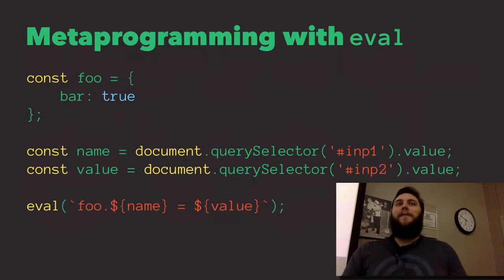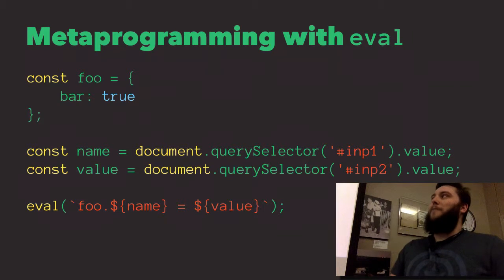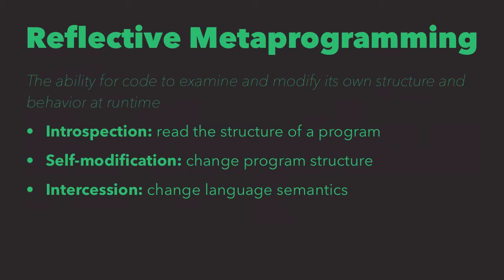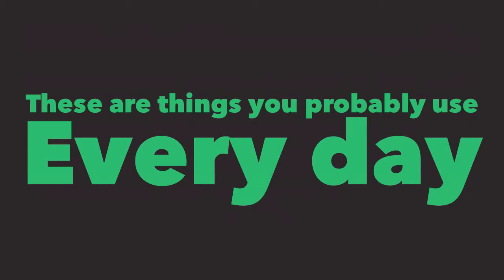Instead, I'm going to talk about a facet of metaprogramming called reflection, or reflective metaprogramming. This is really the code's ability to examine and modify its own structure at runtime. That's broken into three subsections: introspection, which is the ability to read the structure of the program; self-modification, the language's ability to change the program's structure; and intercession, changing language semantics — all of this happening at runtime. This is where I'd argue you're probably doing these three things every day in your JavaScript.